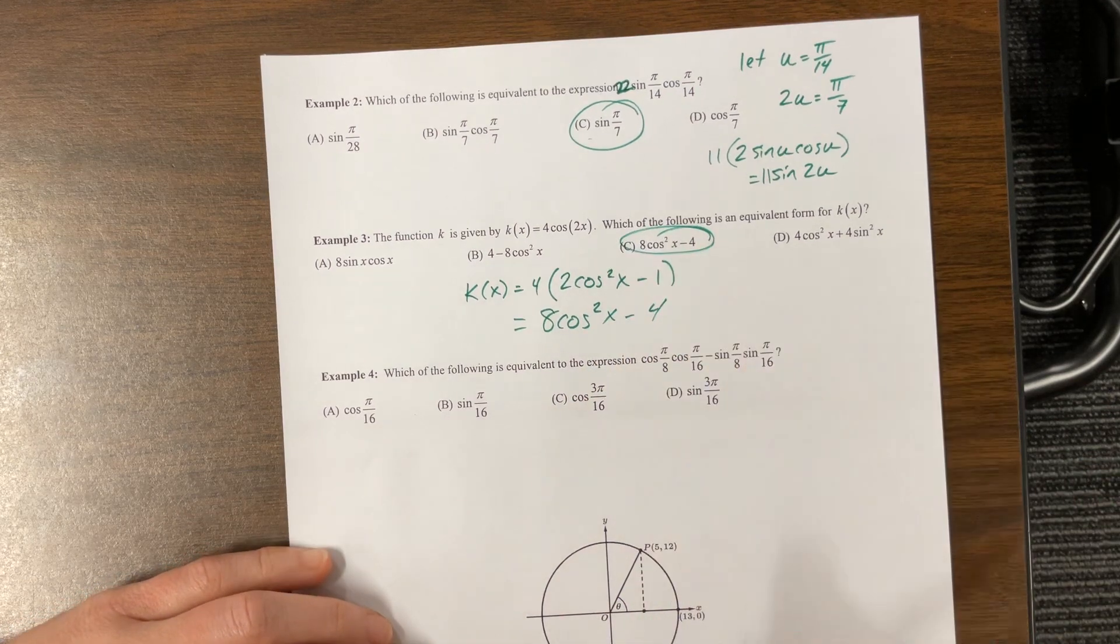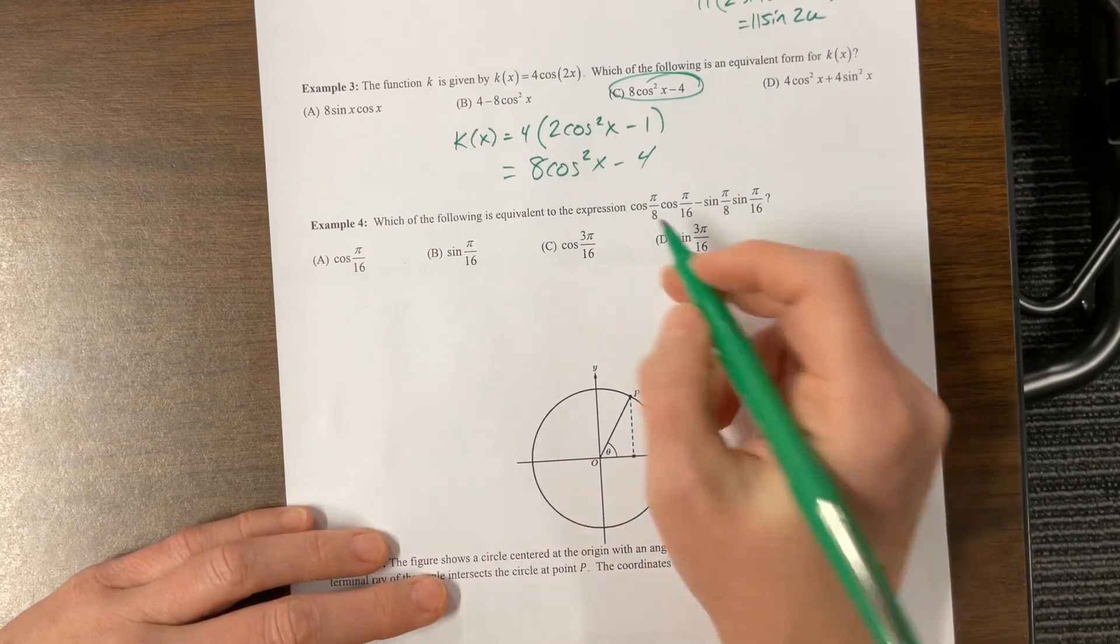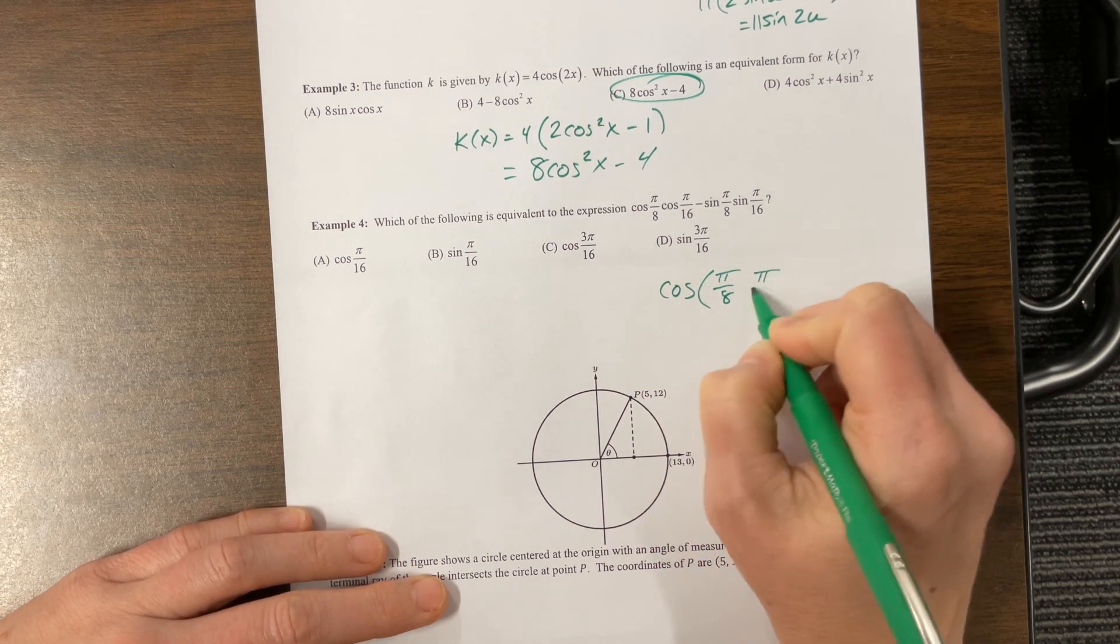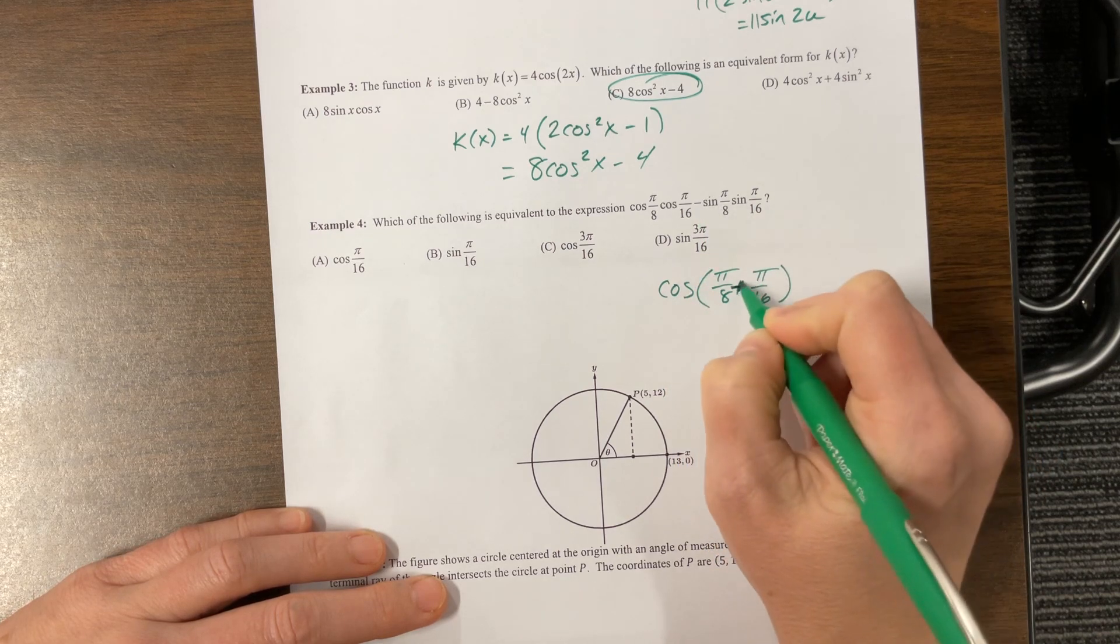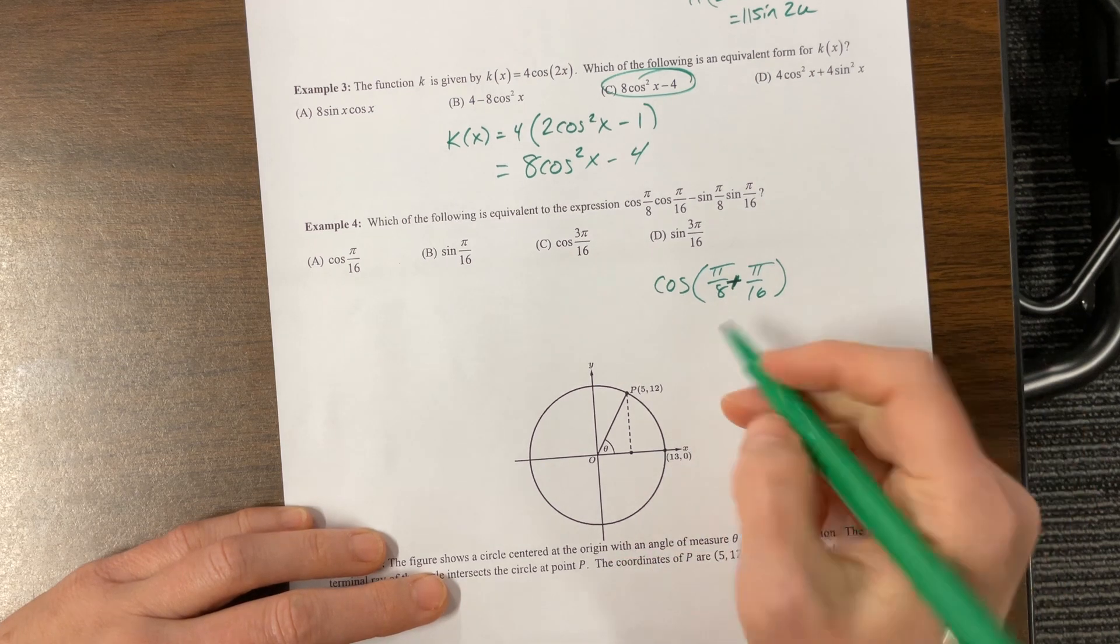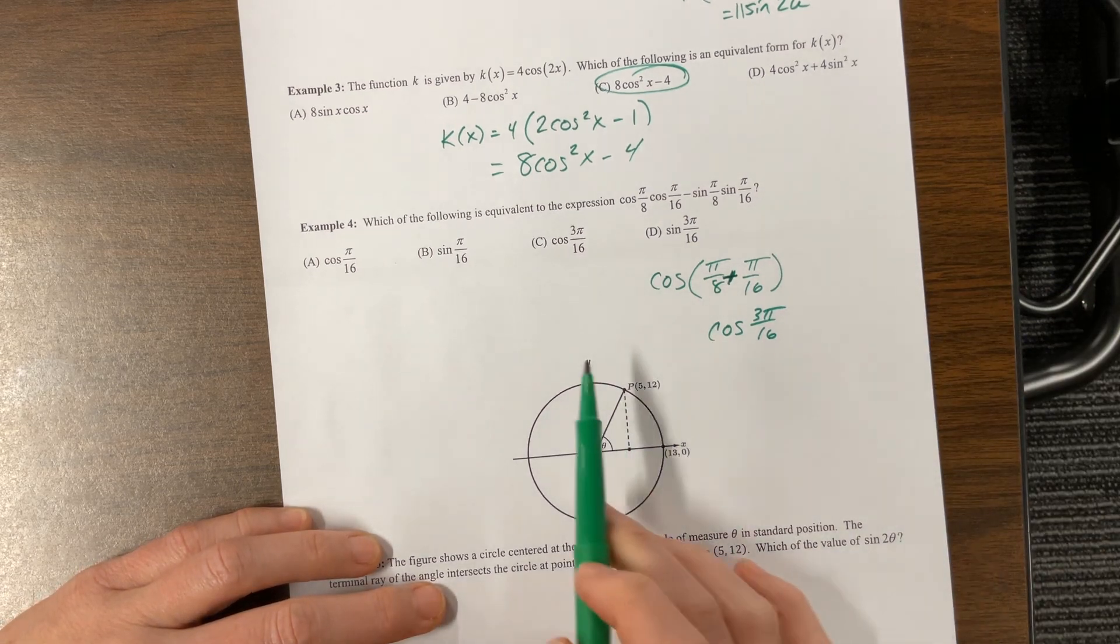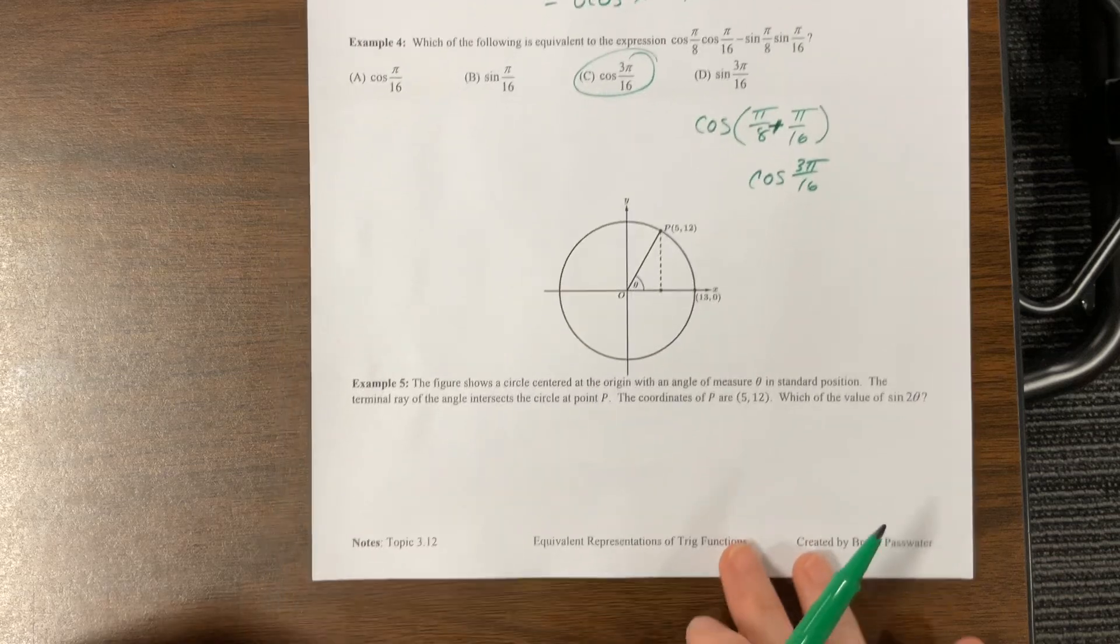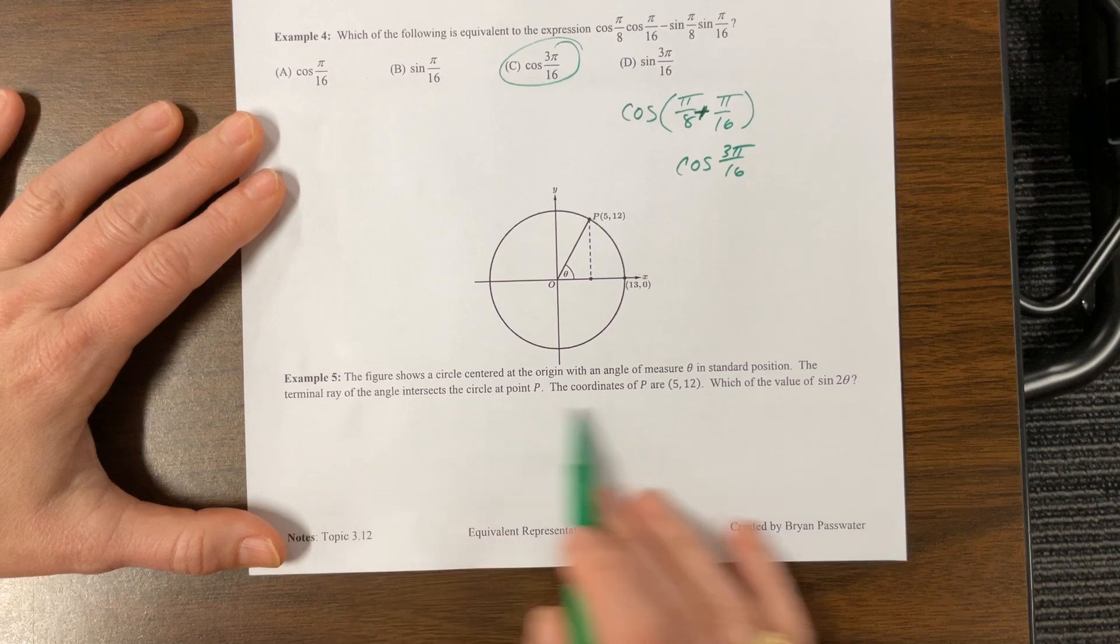Which of the following is equivalent? Okay, so here's what I see: I see cosine cosine sine sine, which cosine cosine sine sine means cosine of the first angle and then the second angle with the opposite sign. So, well, this is what, 2/16 + 1/16 gives me 3/16, so cosine of 3π/16.